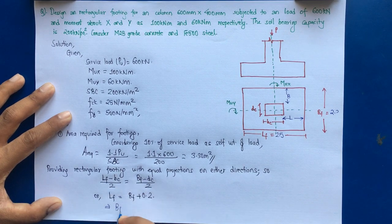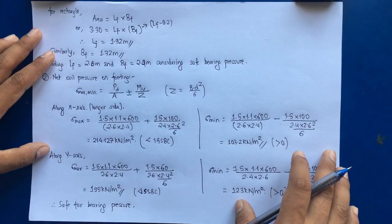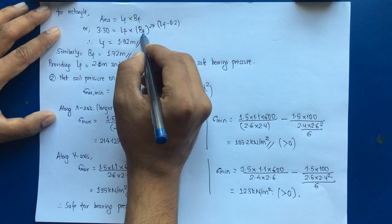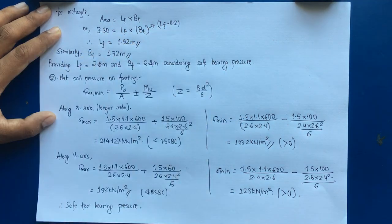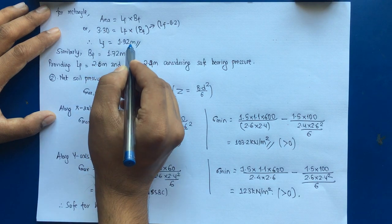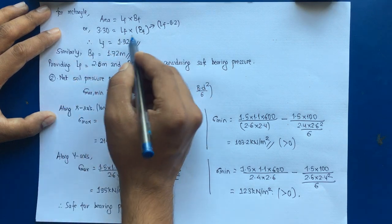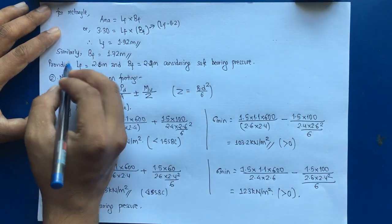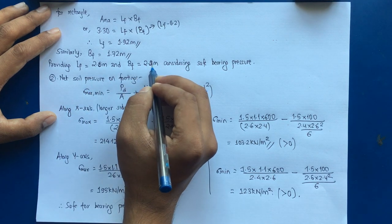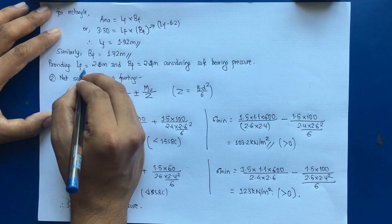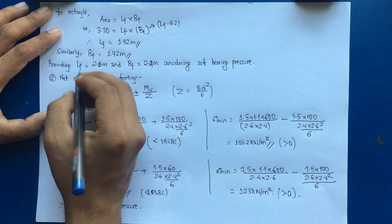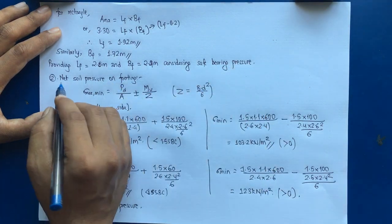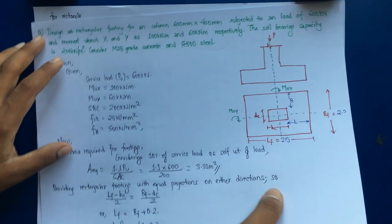Substituting Bf = Lf − 0.2 into Area = Lf × Bf = 3.30, we get a quadratic equation. Solving gives Lf = 1.92 m and Bf = 1.72 m. However, to satisfy bearing pressure conditions, we provide Lf = 2.6 m and Bf = 2.4 m, ensuring the equal projection condition (Lf − 0.2 = Bf) is maintained.